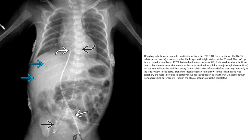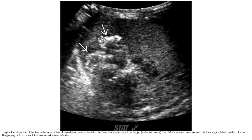Branching lucencies in the right hepatic lobe periphery are most likely due to gas infection during UAC placement. Ultrasound of the liver in the same patient shows a heterogeneous hepatic collection containing echogenic foci of gas. The UAC tip was seen in an extravascular location just inferior to this collection. The gas may represent recent ischemia or superimposed infection.